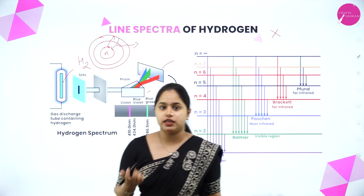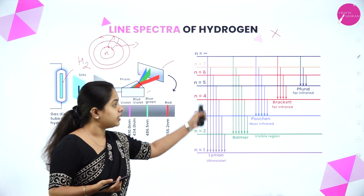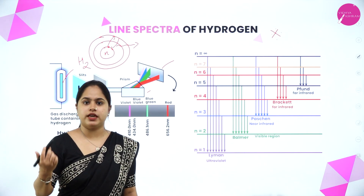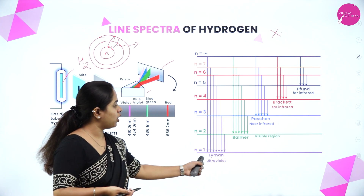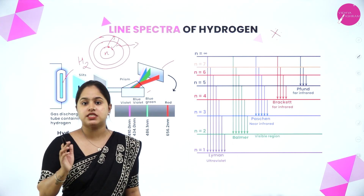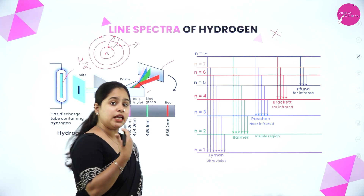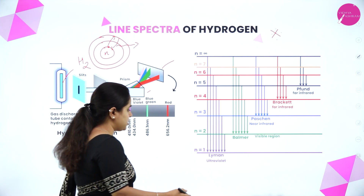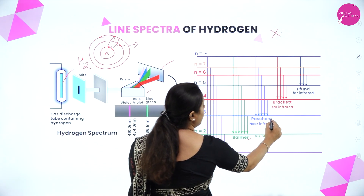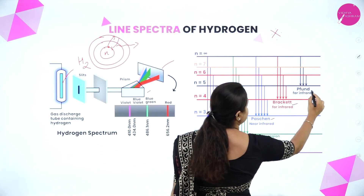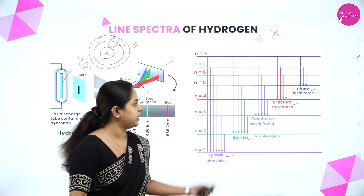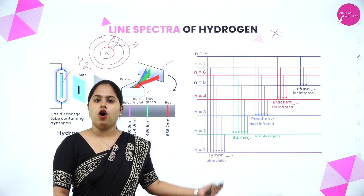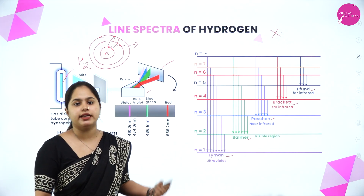The beauty of the line spectrum of hydrogen is that you obtain different series of lines. You are going to study five different series of line spectrum of hydrogen, named after the scientists who discovered them: Lyman series, Balmer series, Paschen series, Brackett series, and Pfund series — the P in Pfund is silent.